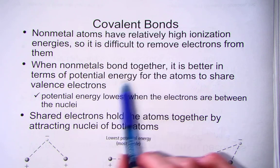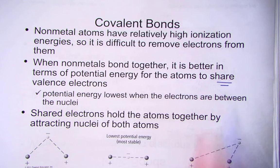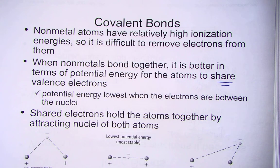When non-metals bond together, it's better in terms of potential energy for the atoms to share electrons, thus lowering the potential energy between the nuclei.